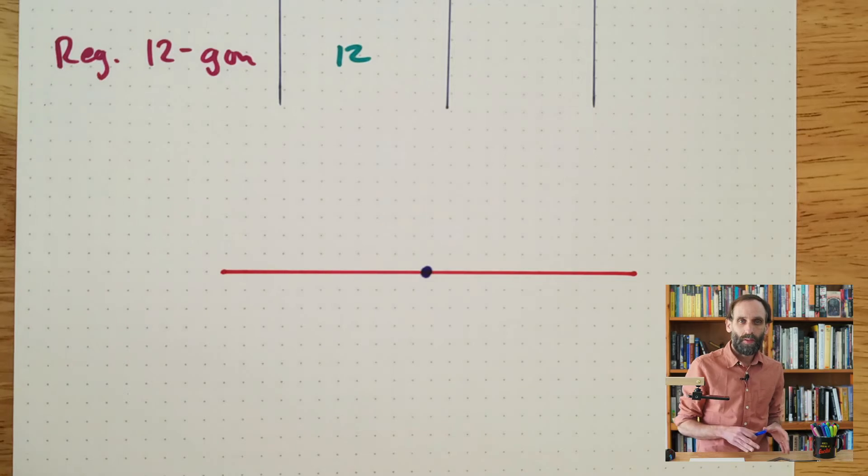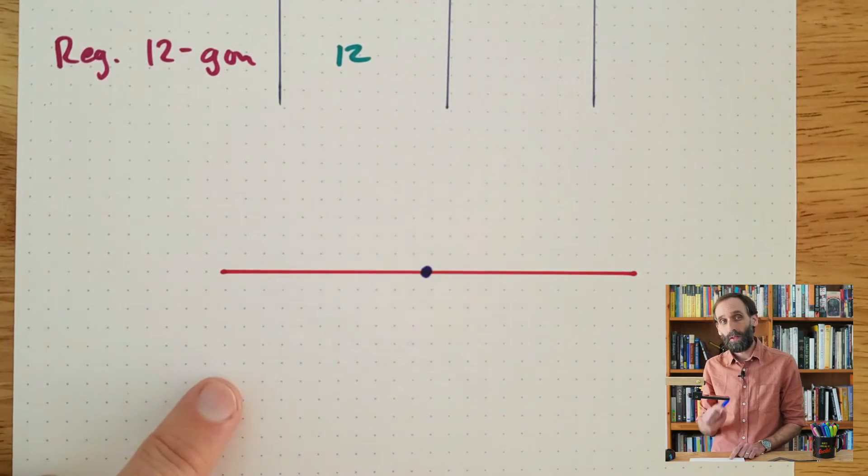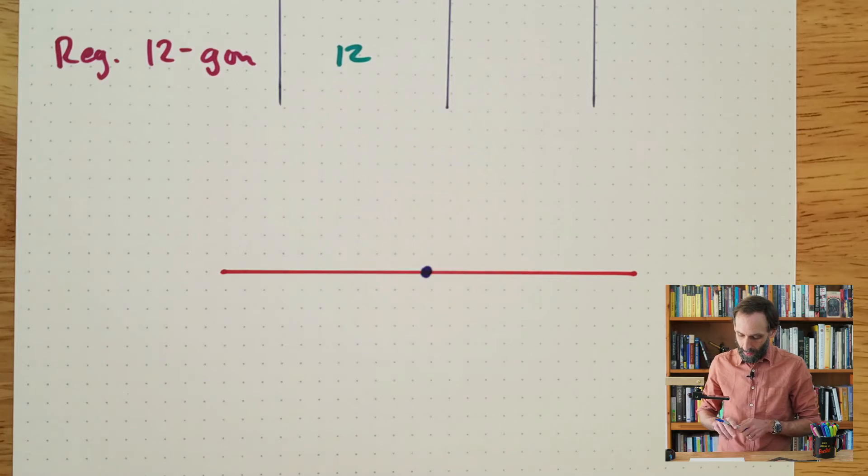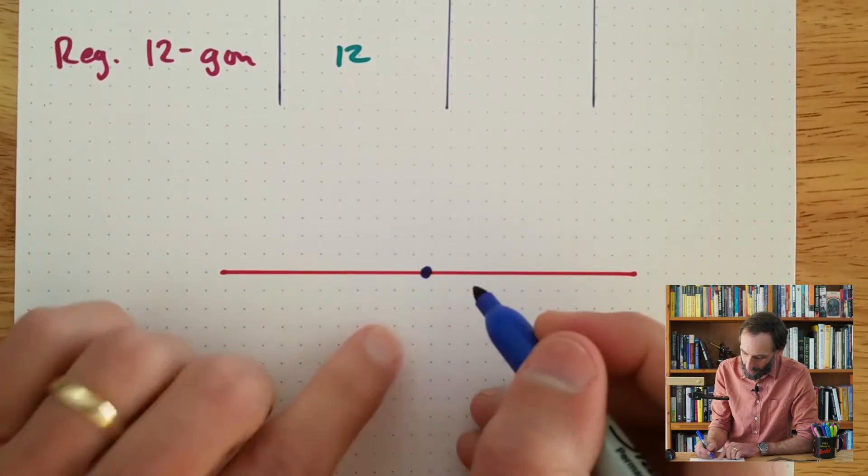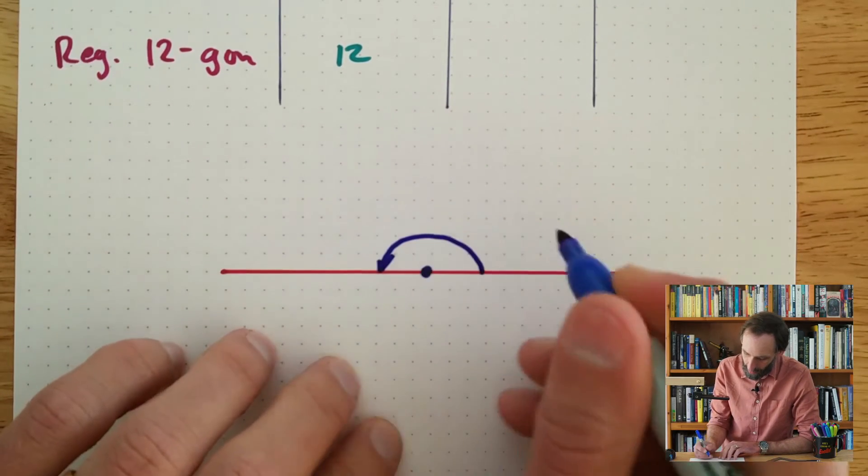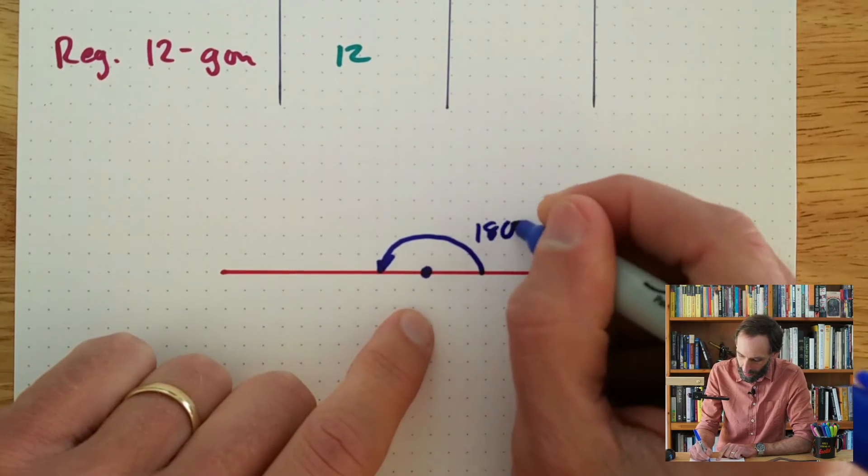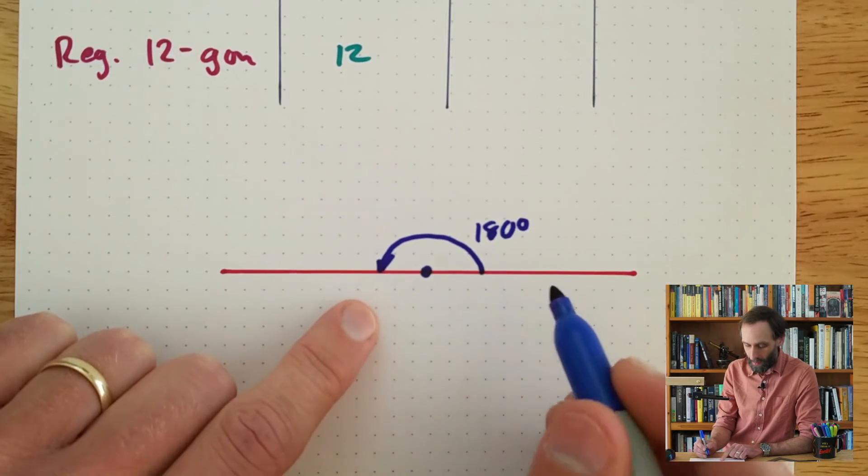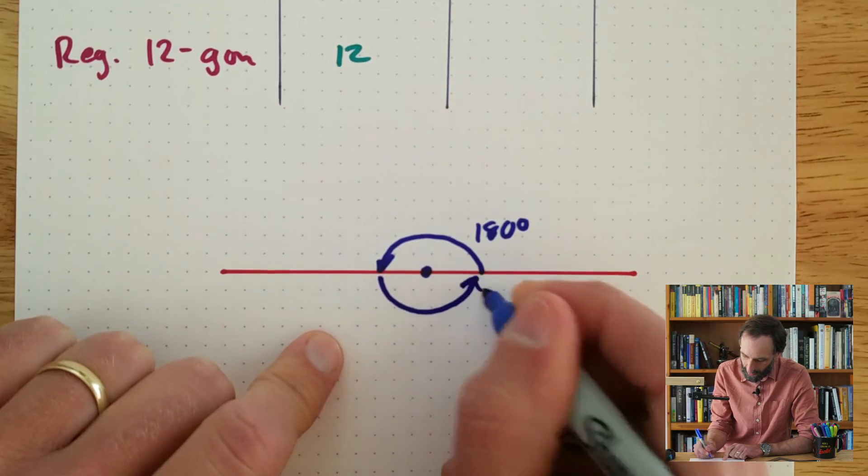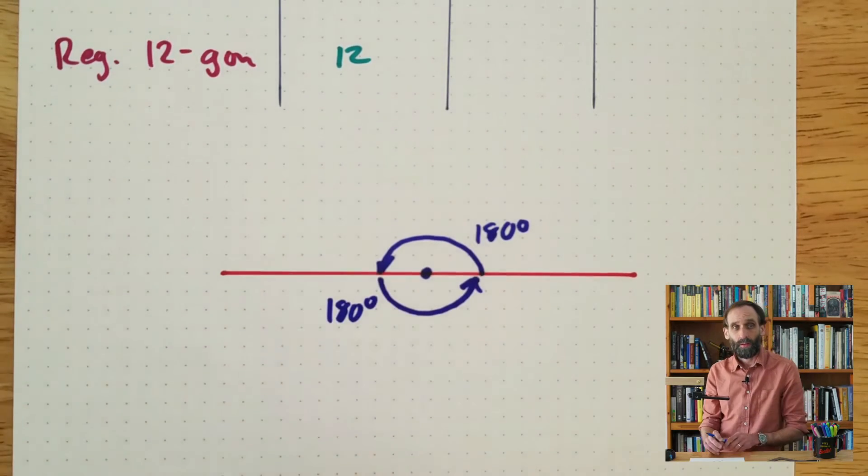The second thing that will be helpful here is a reminder of how many degrees are in a full turn. If you recall from our definition of angle from our axiomatic system, we know that a straight angle—for example, if we have a point on a line, a straight angle would be this angle right here—has a magnitude or measure of 180 degrees. If we look at this line from the perspective of this point, we have a straight angle on the top and another straight angle on the bottom, so there we have another 180 degrees.